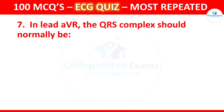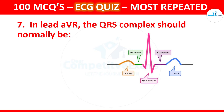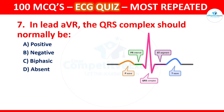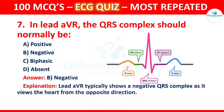Question 7: In lead AVR, the QRS complex should normally be which of the following? Options are positive, negative, biphasic, or absent. The correct answer is negative. Lead AVR typically shows a negative QRS complex as it views the heart from the opposite direction.